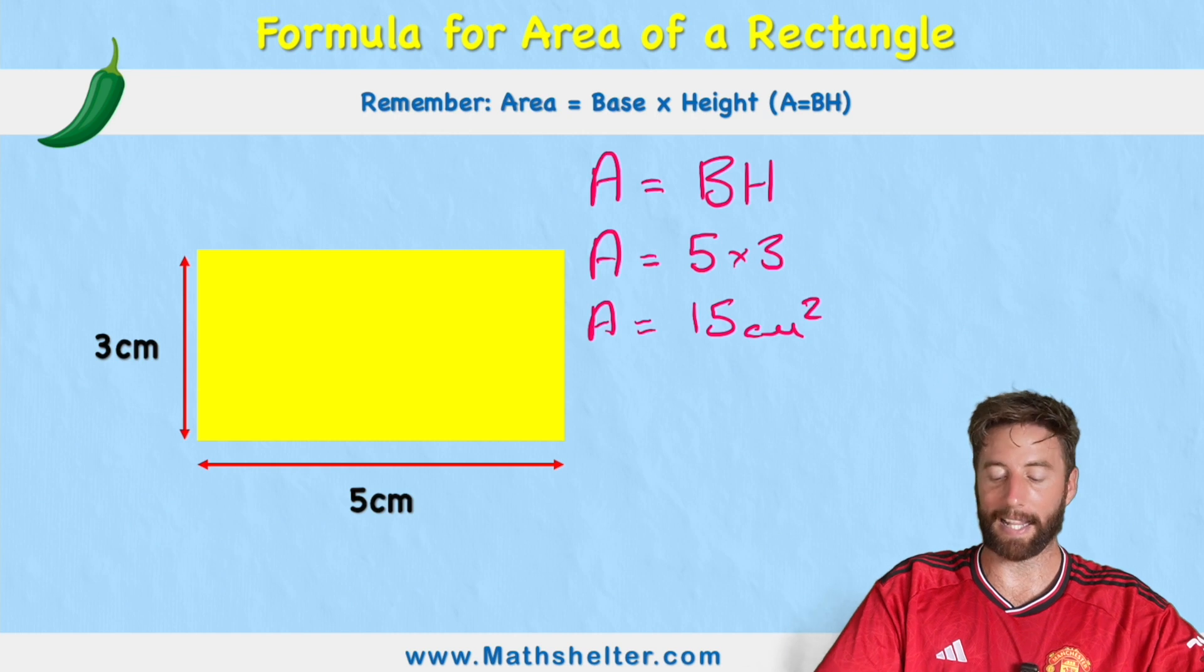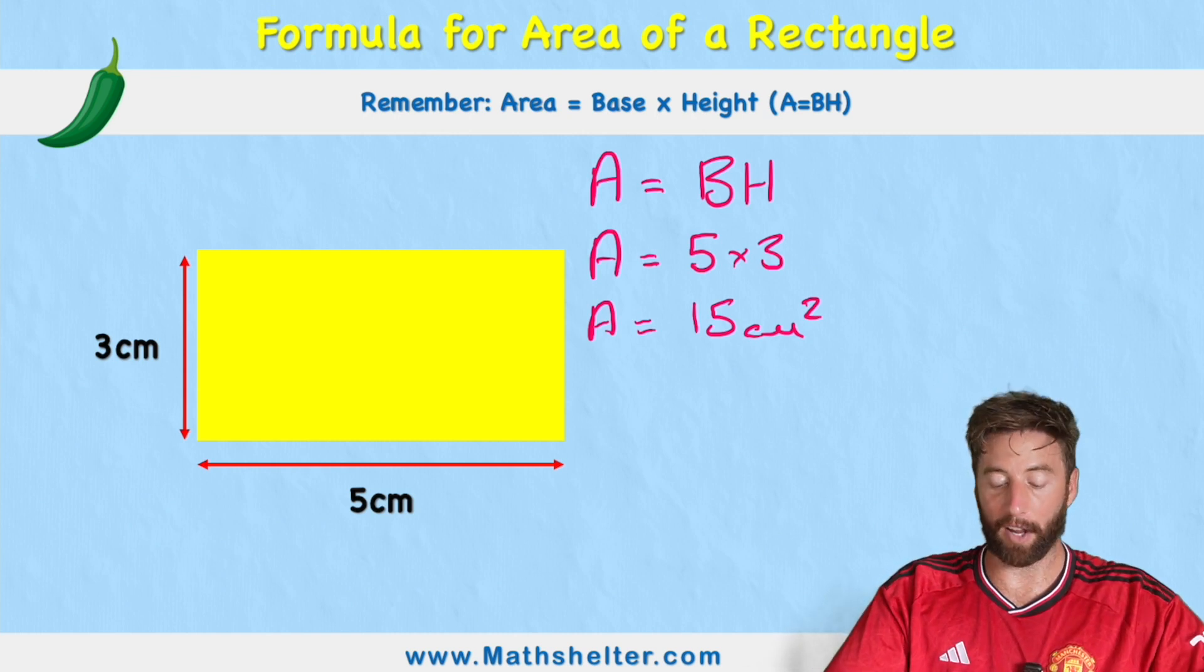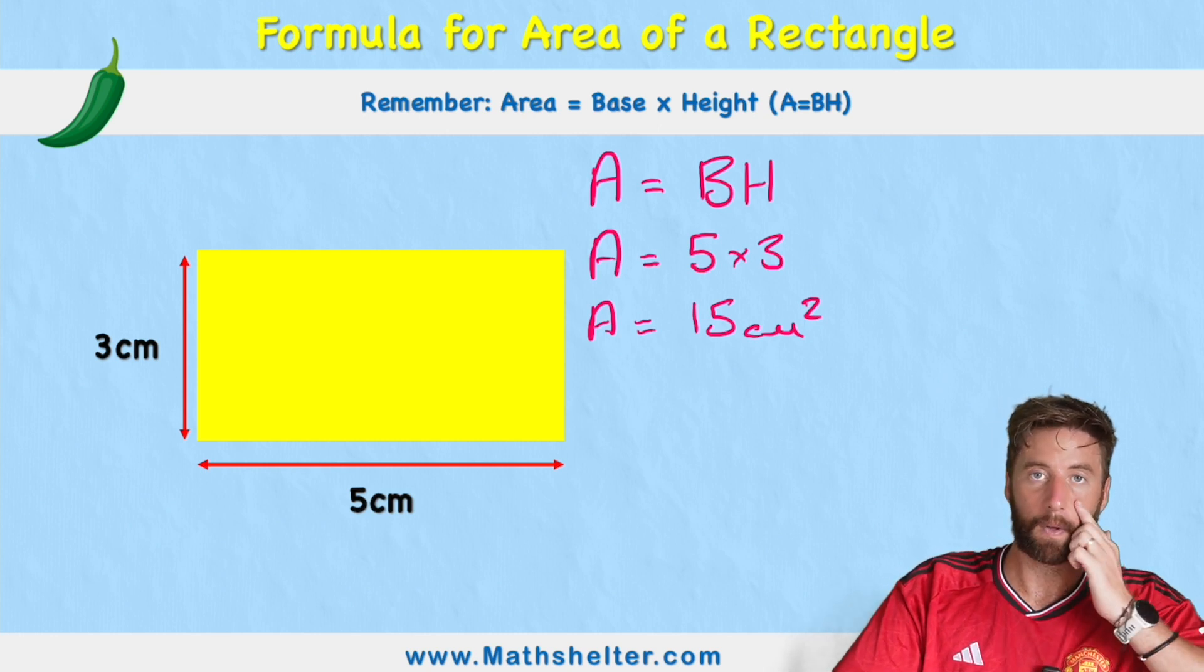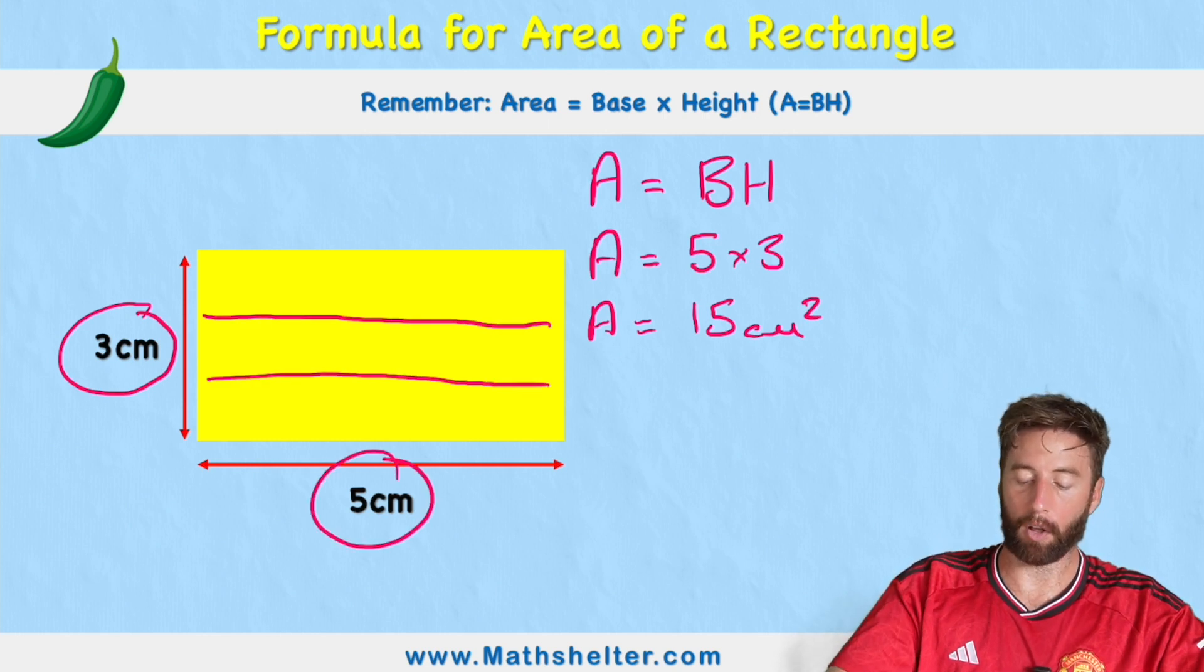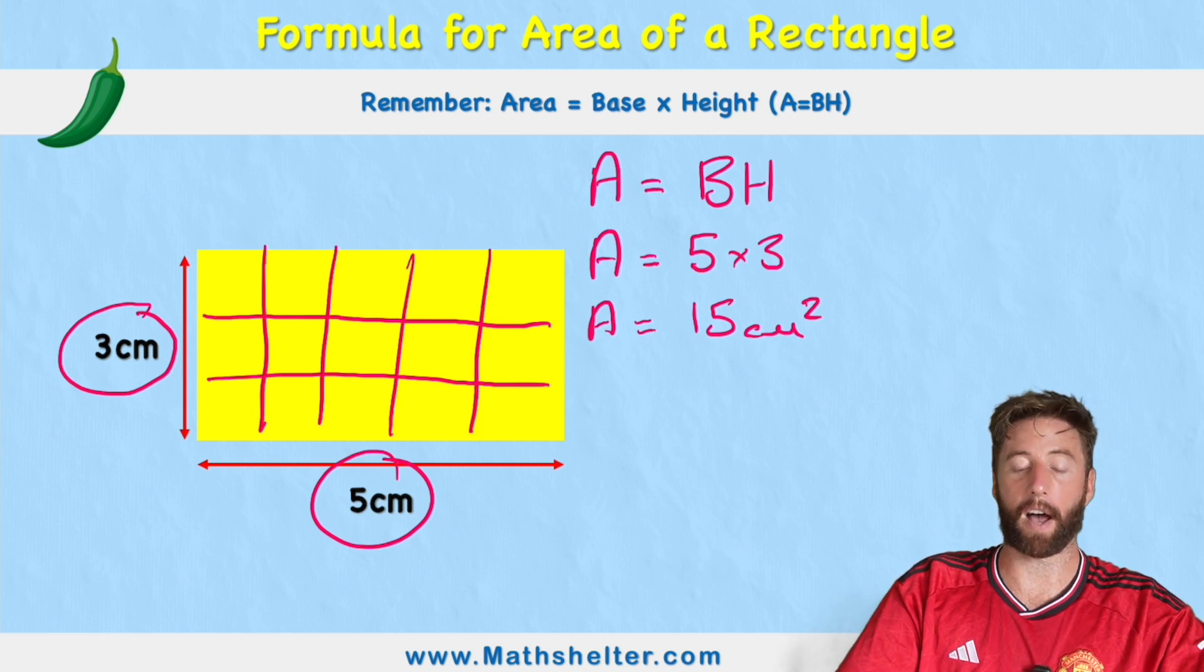And let's understand why we say this squared after centimeters. When we're working with area, essentially what we're doing is we are cutting this rectangle into three rows, just like this, and five columns. One, two, three, four, and five.